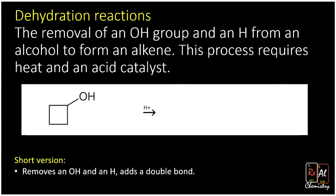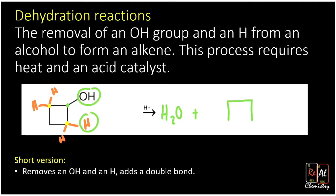The hydrogens that get removed are always from the beta carbons. The alpha carbon is the one the OH is attached to, and the beta carbons are the ones adjacent to it. We choose a hydrogen from a beta carbon, remove it along with the OH, and water is always one of our products. Where we had an OH and H, we now get a double bond between those two carbons.